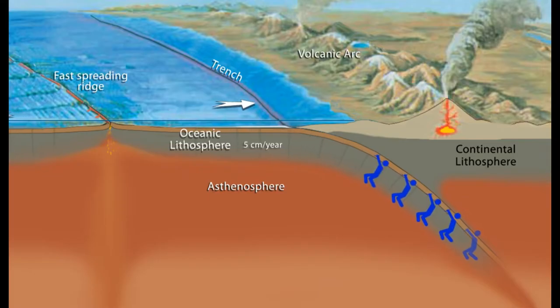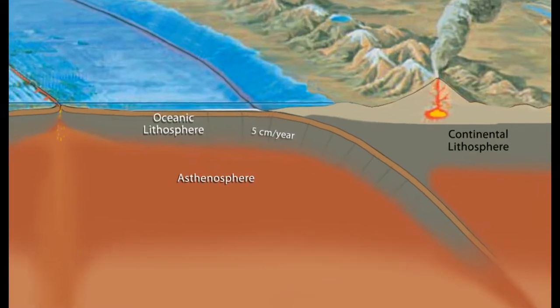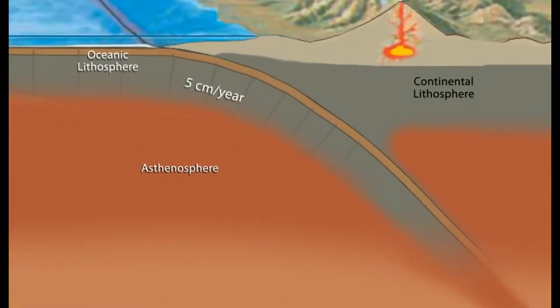It is subducting at 5 centimeters per year into hotter asthenospheric mantle beneath a continental plate. As the oceanic plate subducts, the warming process takes many millions of years as the slab descends. The deeper part of it is continuously replaced, in a conveyor belt fashion, by a cooler plate from above.